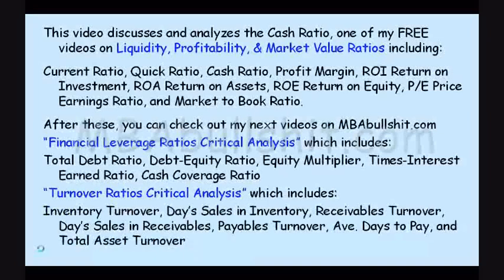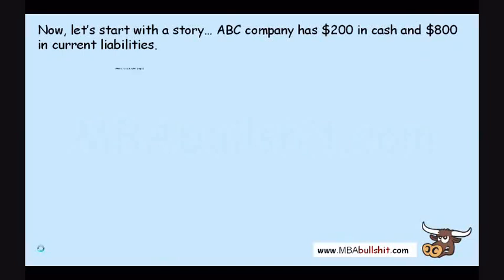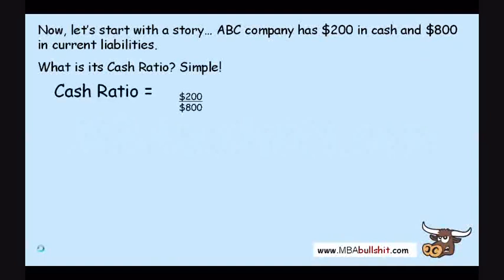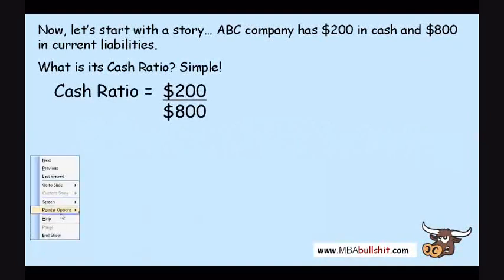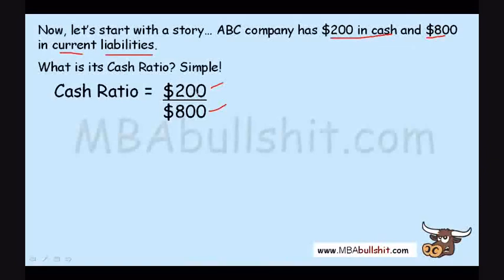Alright, let's get down to it. Let's start with a story. Let's say that ABC Company has $200 in cash and $800 in current liabilities. What is its cash ratio? Very simple — it is $200 divided by $800. Where did we get the $200? It is the $200 in cash. $800 is the $800 in current liabilities, not all liabilities.